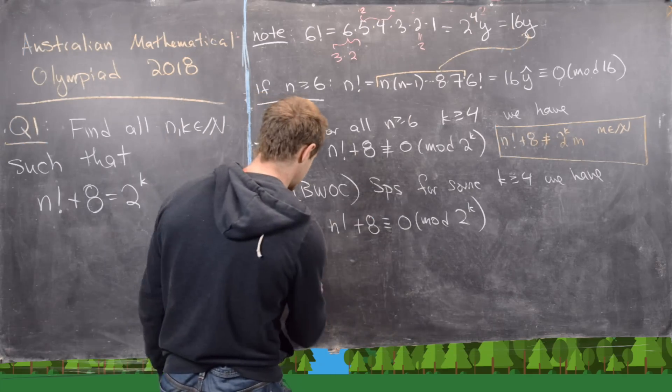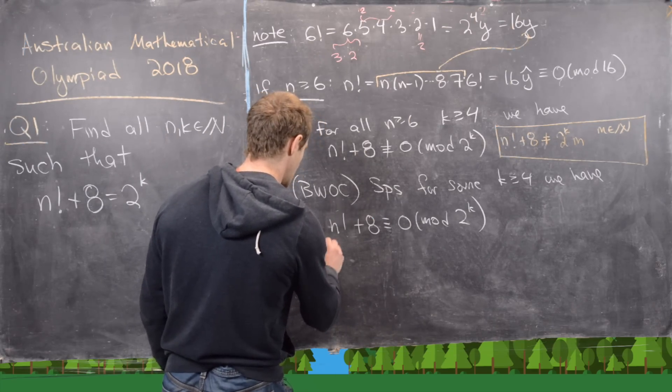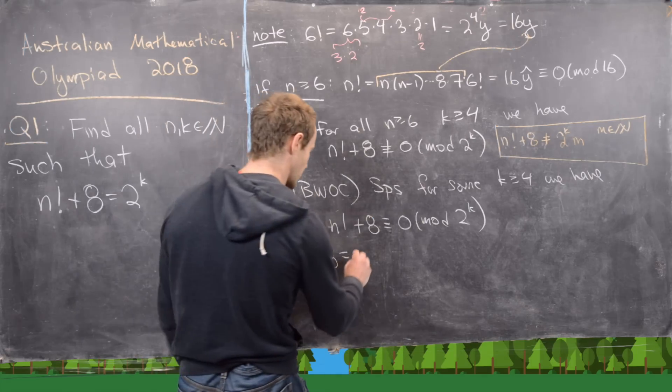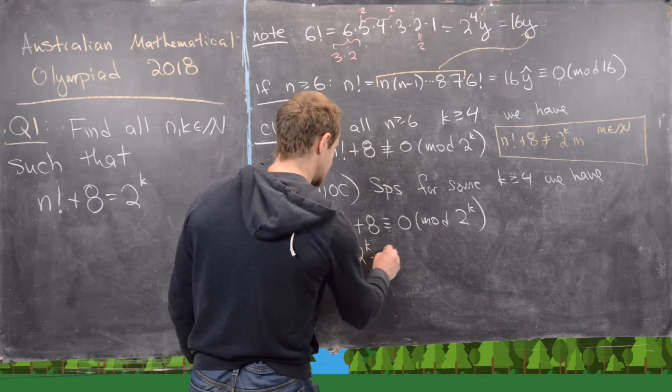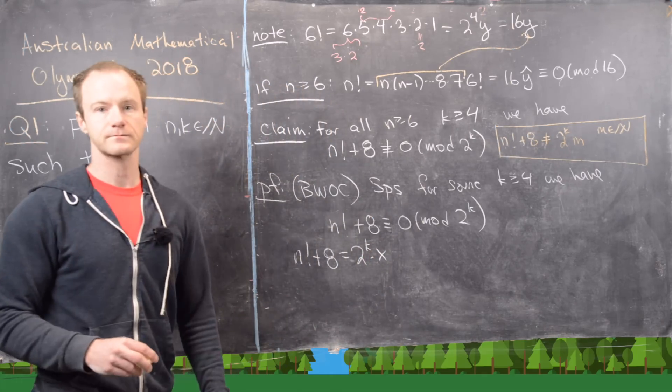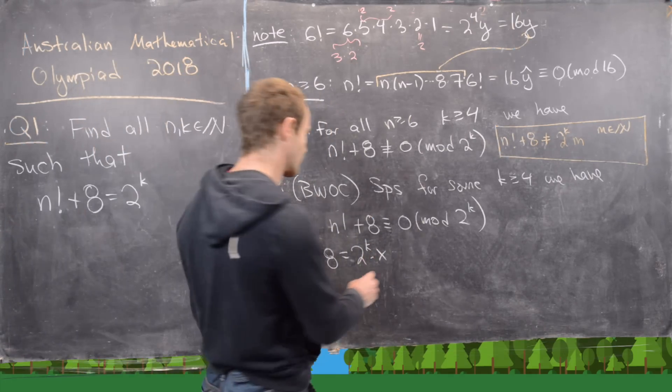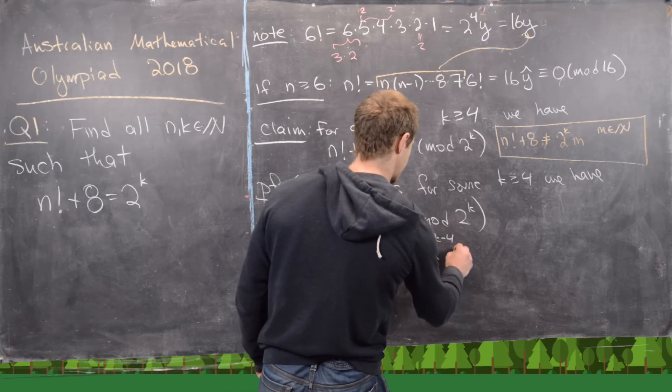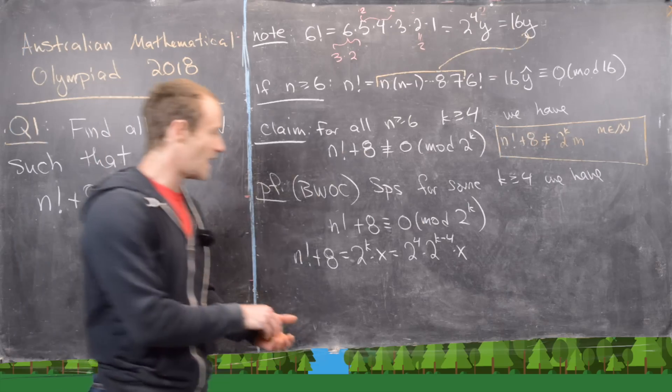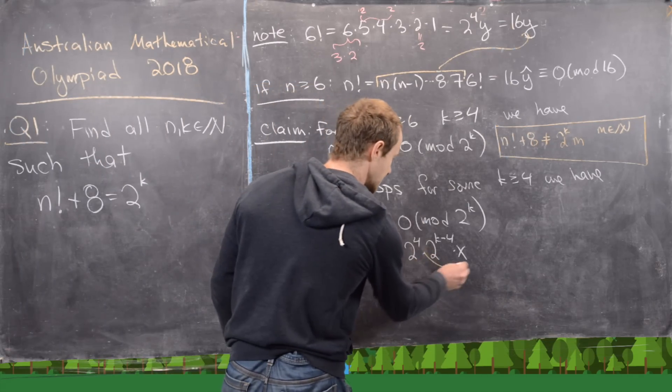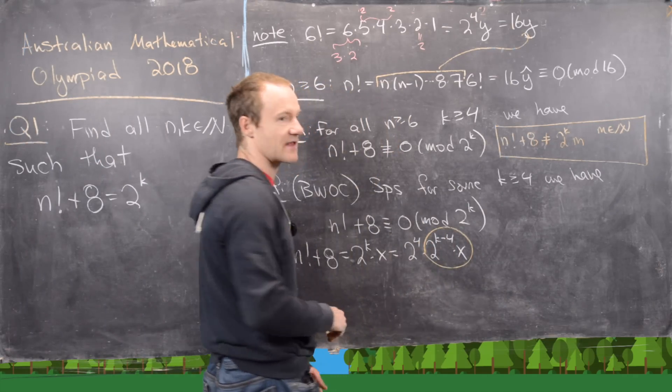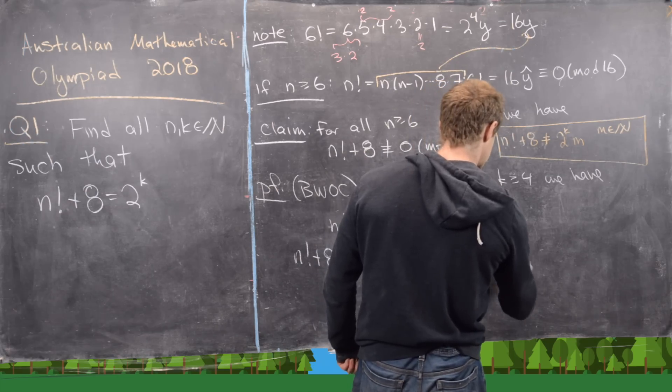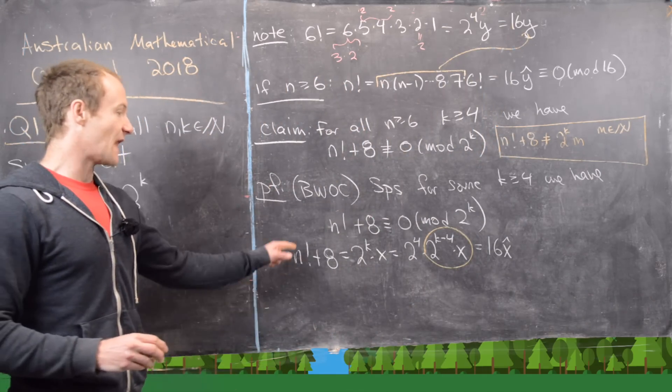But notice what that tells us. That tells us that n factorial plus 8 is a multiple of 2 to the k. So let's go ahead and write that as 2 to the k times x. But we can rewrite that as 2 to the 4 times 2 to the k minus 4 times x. But 2 to the 4 is 16, and then we can slam those together into x hat. So that's going to be equal to 16 x hat.